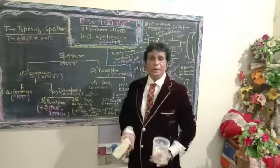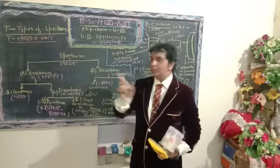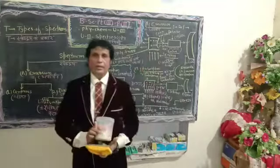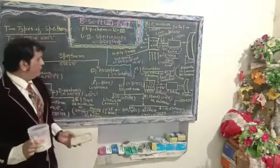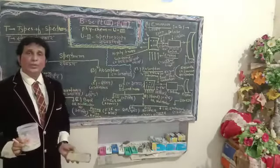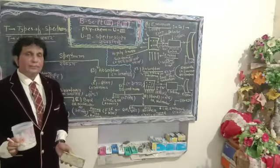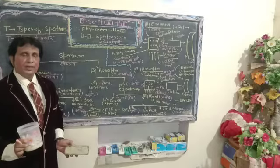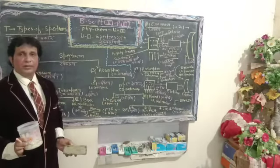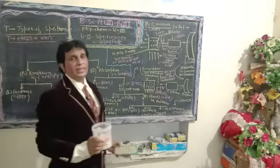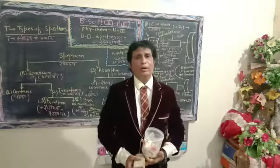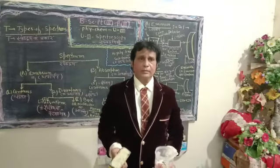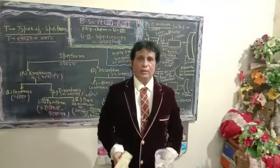Emission spectrum is further divided into its sub-classifications: continuous spectrum and discontinuous spectrum. Similarly, absorption spectrum is also further divided into two sub-kinds — the first is band spectrum, and the second is discontinuous spectrum.